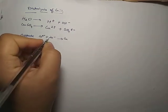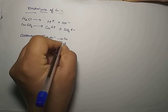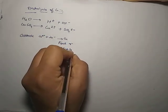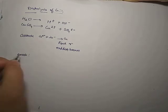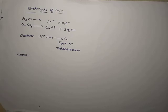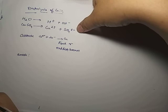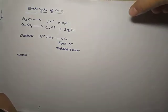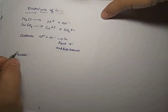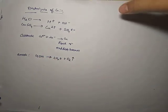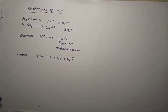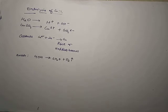A pink or reddish brown color will deposit on the cathode. At the anode, we have two ions: OH⁻ and SO₄²⁻. Sulfate has less oxidation potential compared to OH⁻, so the anode reaction is: 4OH⁻ → 2H₂O + O₂. Oxygen gas is released at the anode, while pink or reddish brown copper deposits at the cathode.